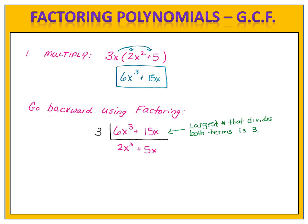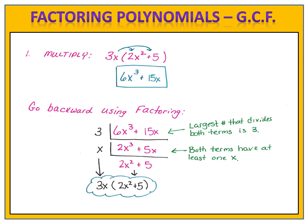Now we turn our sights on the variables. We have x to the third in the first term and a single x in the second term. We take out the amount that has the lowest exponent. x to the first is the smallest amount of x's in either of the terms, and so we will factor out an x. We divide both terms by x and we have the result 2x squared plus 5. We re-examine the terms to see if there are any other factors to divide out. There are not.